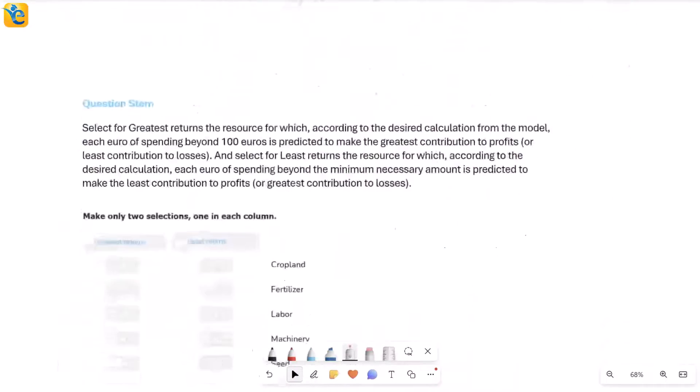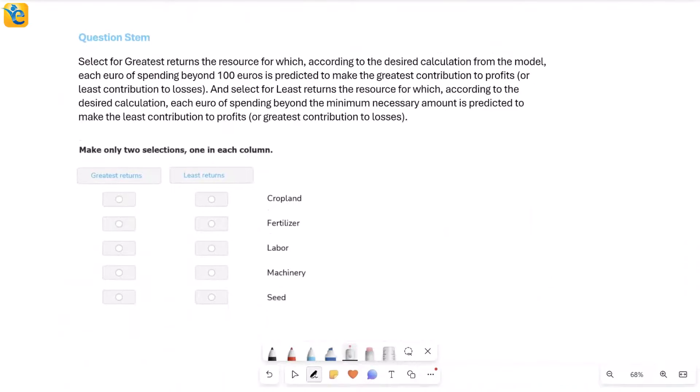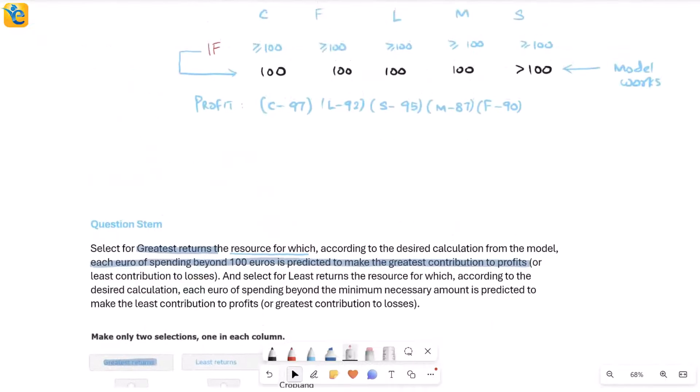Let's see what the question is asking. It says you need to select for greatest returns the resource for which, according to the desired calculation from the model, the profit model, the expression that we have, each euro of spending beyond 100 euros is predicted to make the greatest contribution to profits or the least to losses. I'll just pause here.